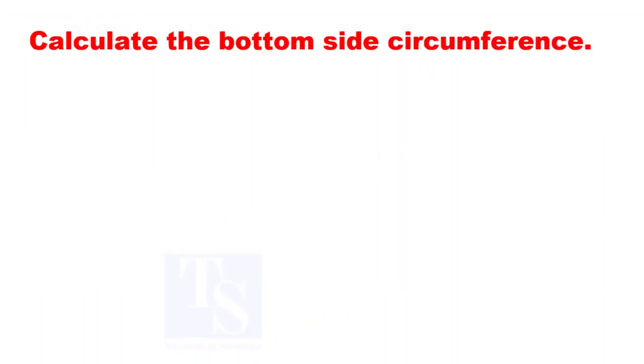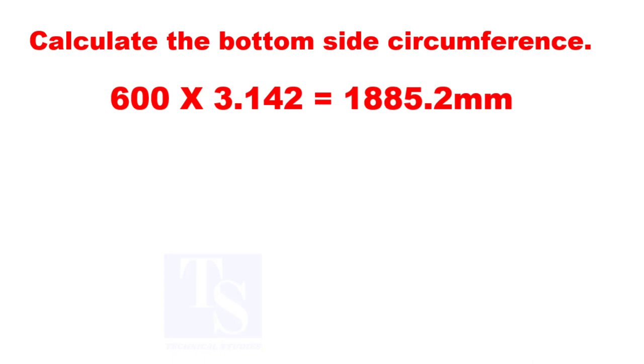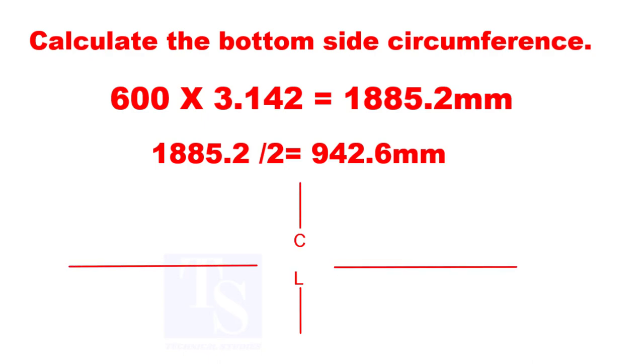Let us calculate the bottom side mean diameter circumference. And divide the circumference by two and mark the length on both sides. If required, you can mark the full length to one side.